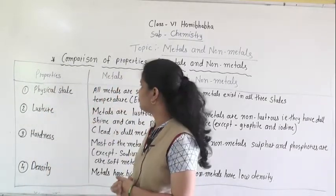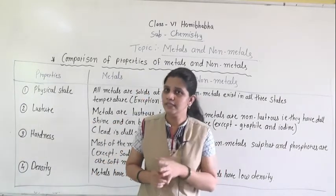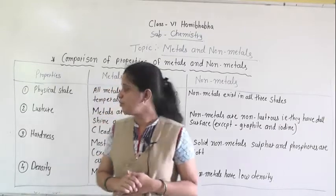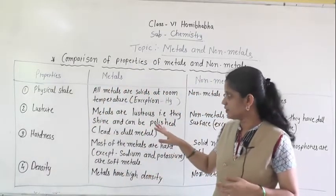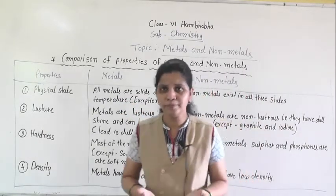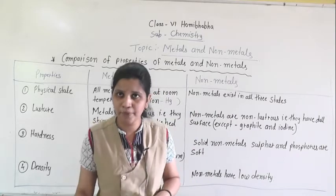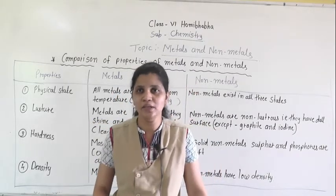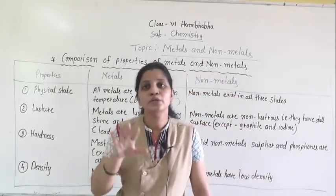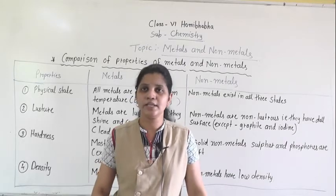The first physical property is physical state. Physical state means solid, liquid and gas — we already discussed this in the previous lecture. Mostly all metals are solid at room temperature. Room temperature means the natural temperature of the surrounding. So in this normal temperature, mostly all metals are solids.